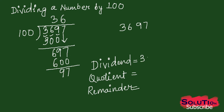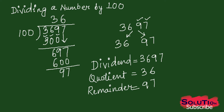So we have dividend 3697, quotient 36, and remainder 97. If I look at the dividend, you can clearly see that if I separate the ones place and tens place digits from the number 3697, writing 97 separately and the remaining digits 36 separately, then 97 is our remainder and 36 is our quotient.